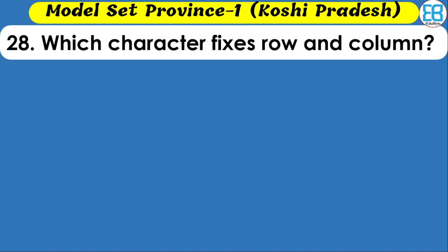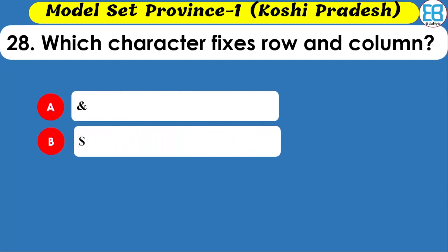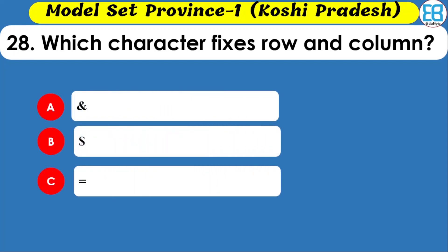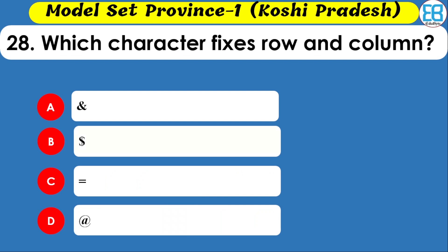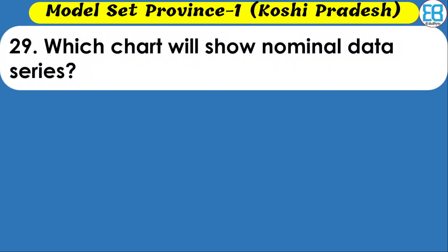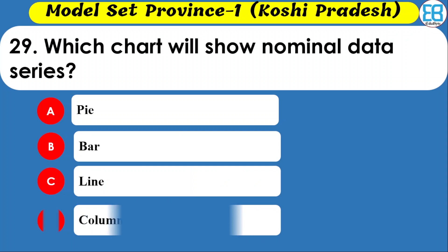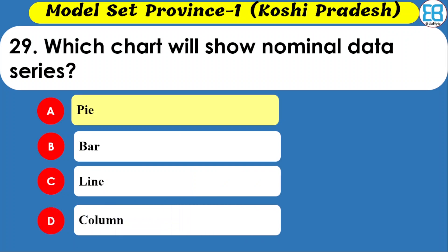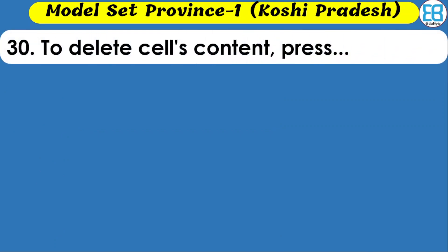Which character fixes a column reference in a spreadsheet? The correct option is the dollar symbol — it fixes a column or row reference. Which chart type represents nominal data series? Options are pie, bar, line, and column. The correct option is bar chart.